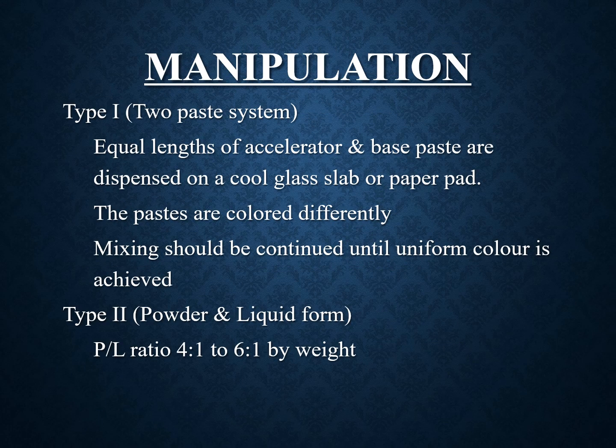For manipulation: Type 1 is a toothpaste system — equal lengths of the accelerator and base pastes are dispensed onto a cool glass slab or pad. The pastes are colored differently, and when mixed, you get a uniform color. Type 2 is a powder-and-liquid form with a ratio of 4:1 or 6:1.